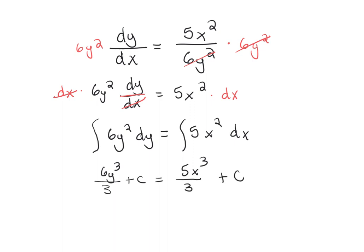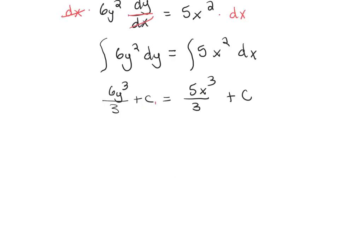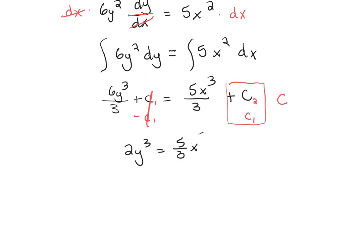Our goal is to solve for y. Think of the left constant as c1 and the right as c2. When we subtract, those constants combine into just some other constant c. So I'm going to rewrite this as 2y to the third equals 5 thirds x to the third plus c.